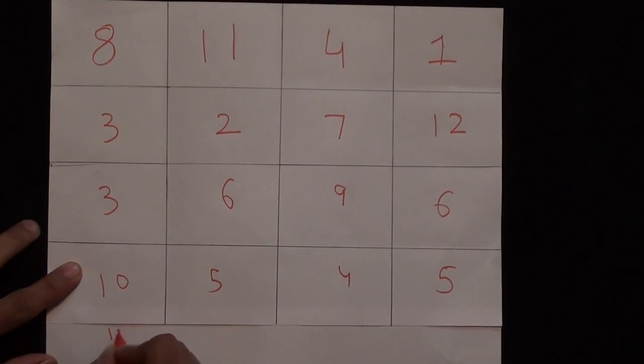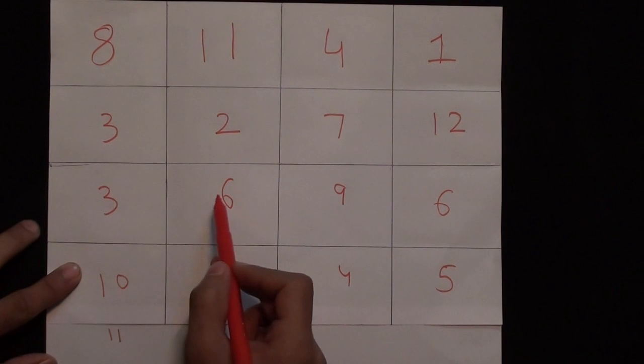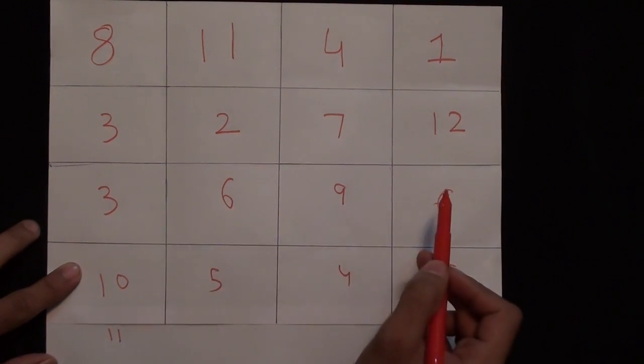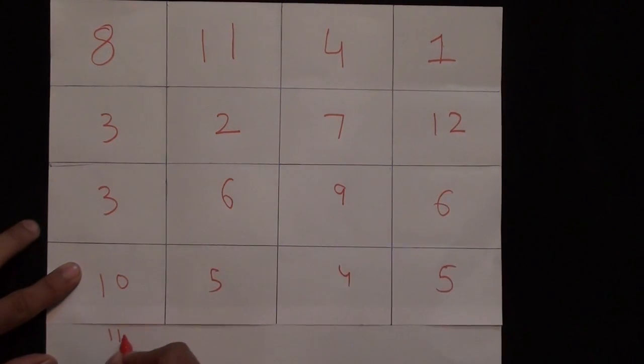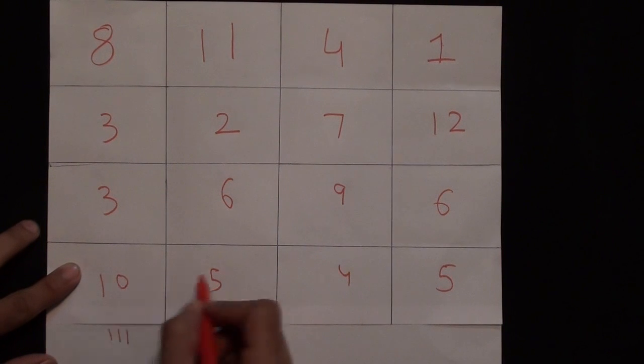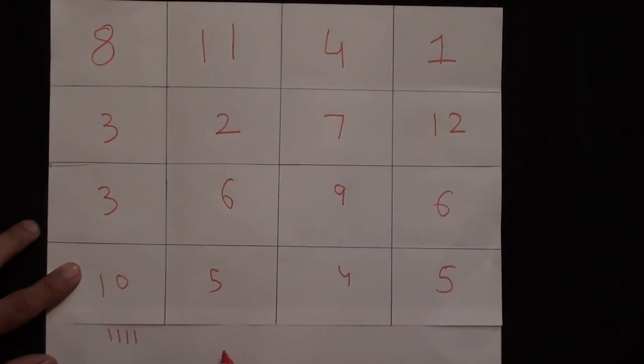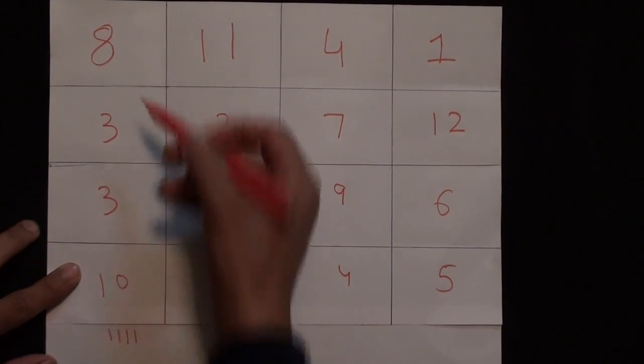3 plus 6 plus 9 plus 6 also equals 24. Now 10 plus 5 plus 4 plus 5 also equals 24. Not only that, you can also go vertical: 8 plus 3 plus 3 plus 10 equals 24.